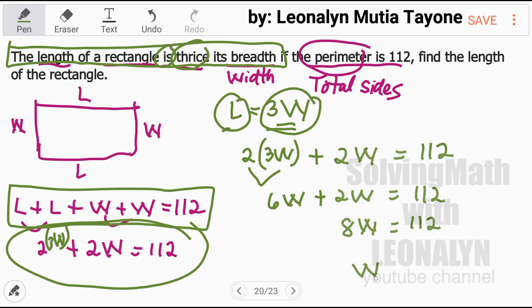To get the value of W, since 8 is multiplying W, it divides 112. In other words, we divide 8 on both sides to cancel it. So W equals 112 divided by 8, and that is 14.